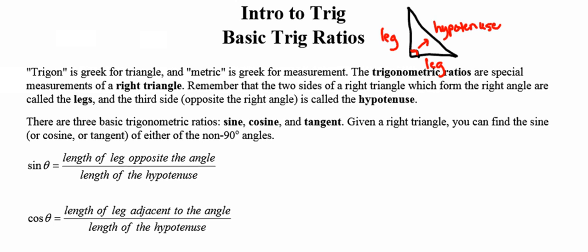There are three basic trig ratios that we're going to focus on in class this year: the sine ratio, the cosine ratio, and the tangent ratio. Given any right triangle, you can always find one of those ratios for either of the non-right angles.